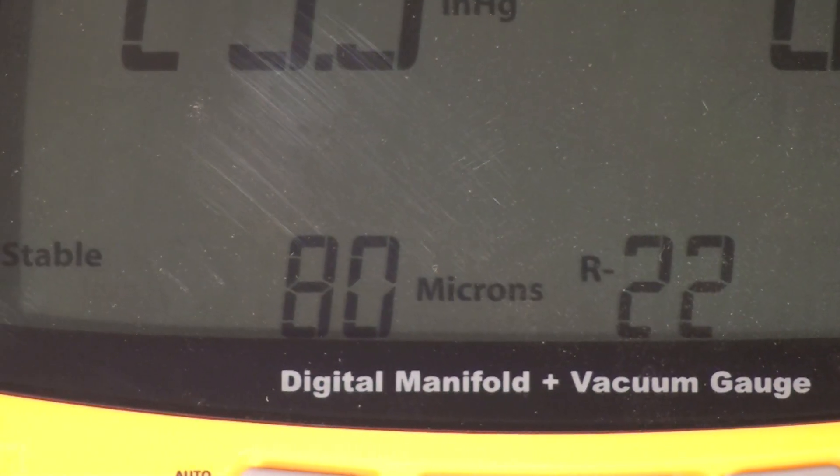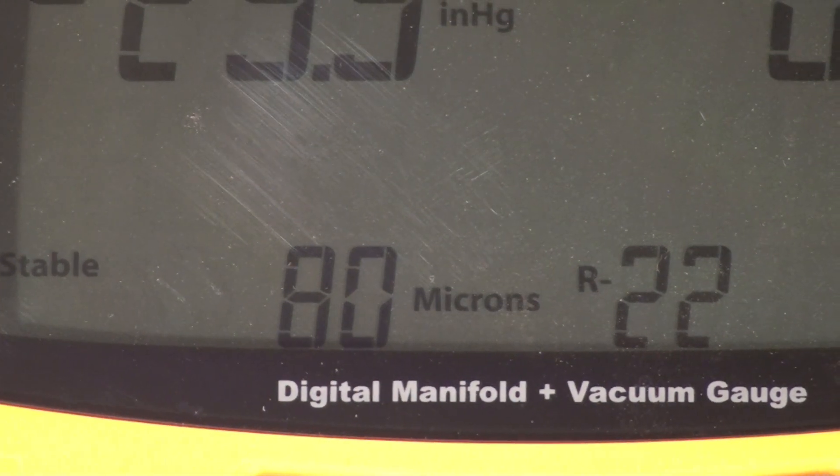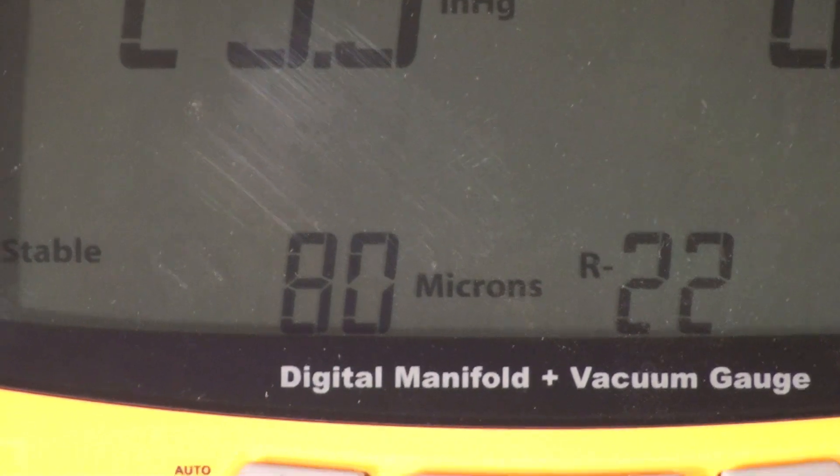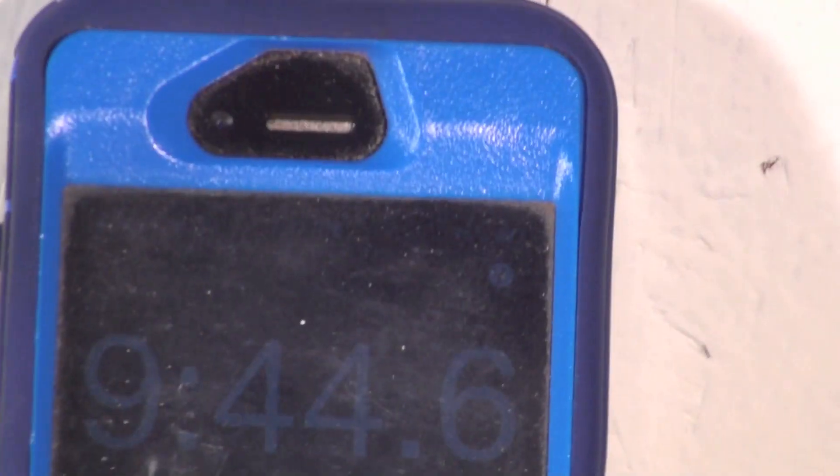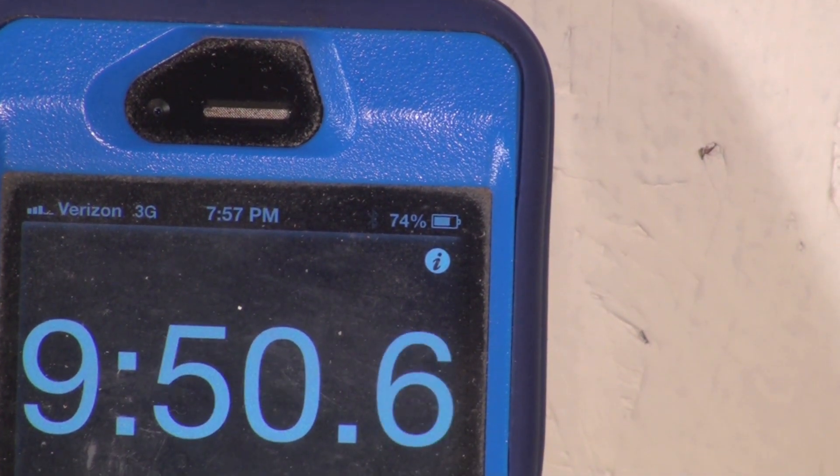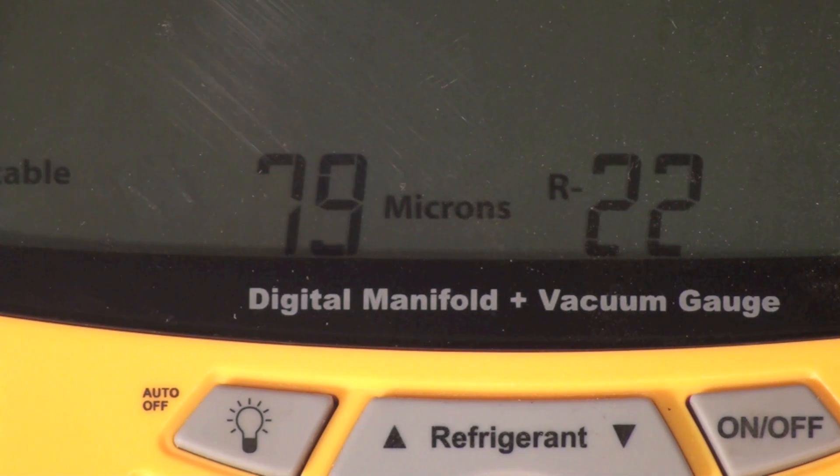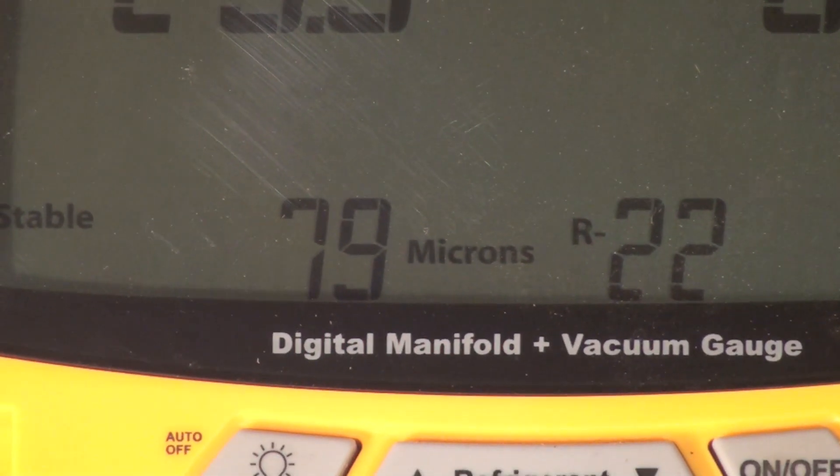Okay, I've gotten pretty stable, it looks like it's going down about 1 every 15 seconds or so, and that is 9.45, say 10 minutes to get down to 80. Okay, we'll call it good at that.